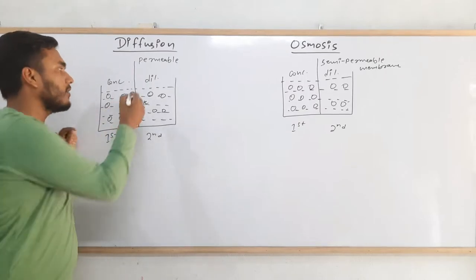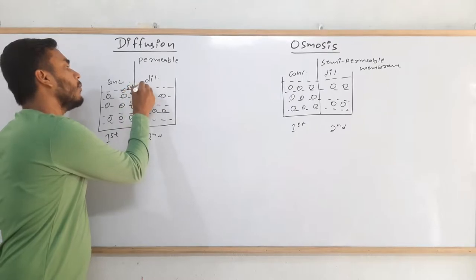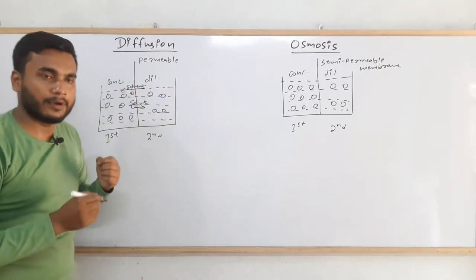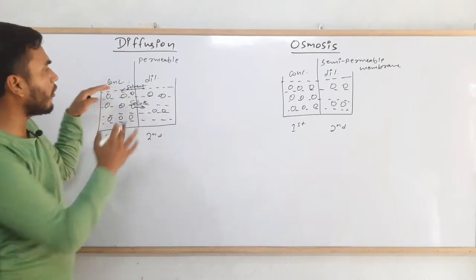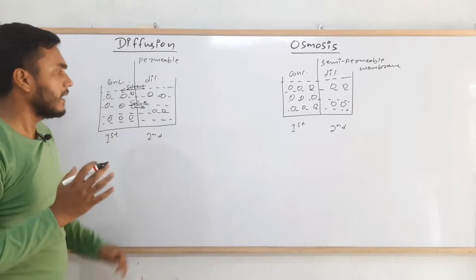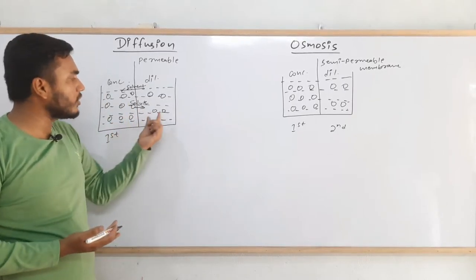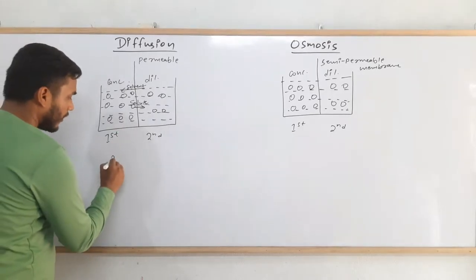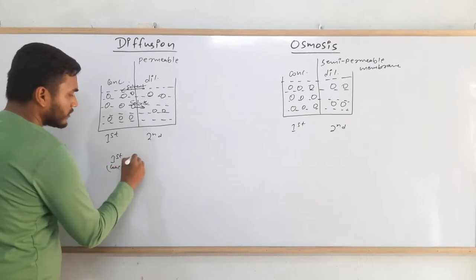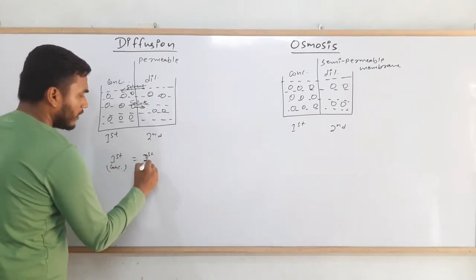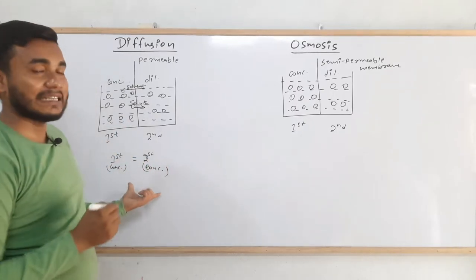This is a bilateral process. At the same time, the solvent molecules will also flow from right to left, keeping the volume of both solutions the same. This process will keep happening until the concentration of both solutions becomes equal — there will be a point when the concentration of the first solution equals the concentration of the second solution.